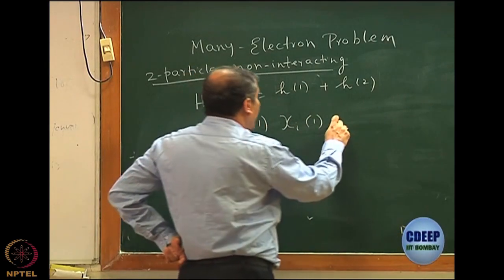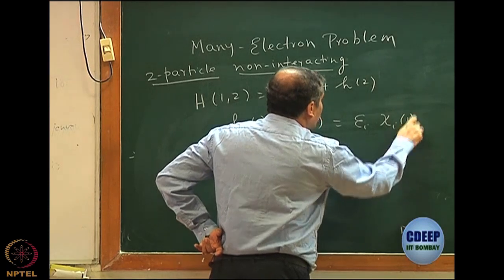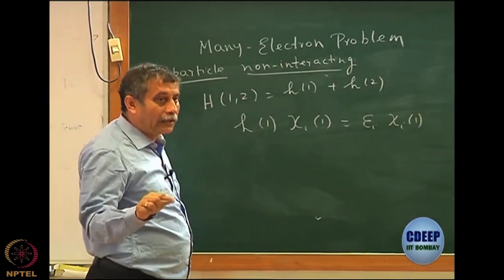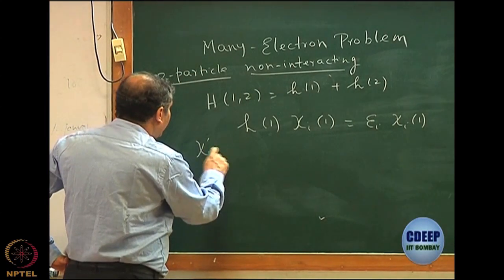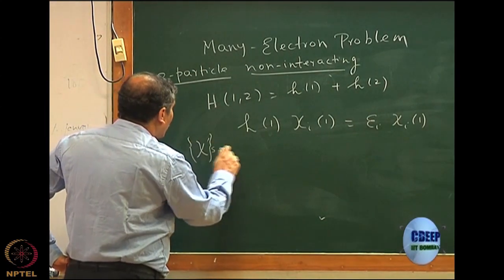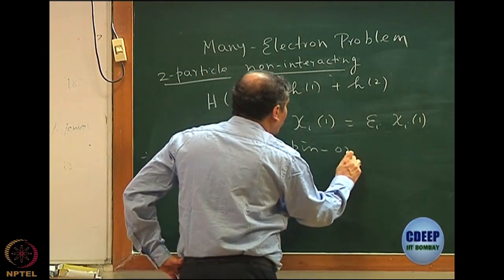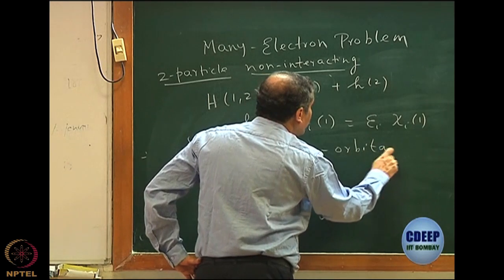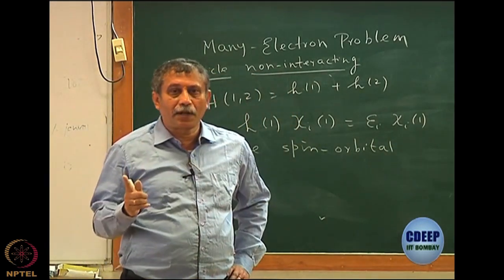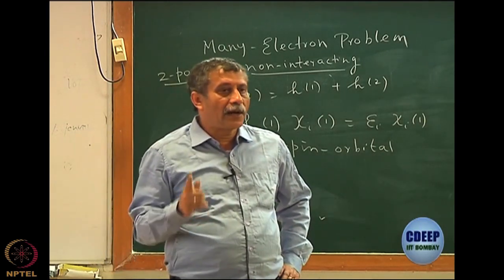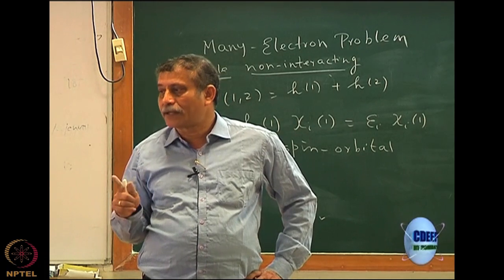This is the eigenvalue equation of the one-particle operator. Please note the symbol I am using: chi. These chi's are what I now call spin orbitals. We will use this symbol whenever we have a spin orbital. What is a spin orbital? It is a one-electron function containing the space coordinates and the spin coordinates.